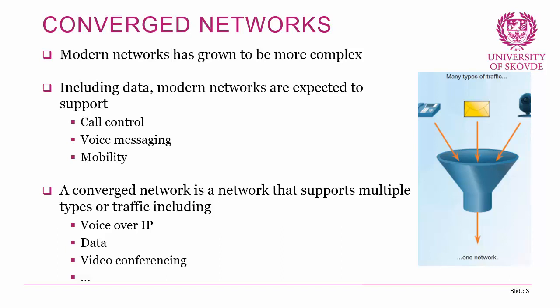Traditionally there have been different networks for each type of traffic — one telephony network, one data network, and possibly a separate video conferencing network. But in a modern converged network, one network is able to support all those different types of traffic. In one sense that's good because there's only one network to manage, but on the other hand it brings more complexity because the requirements on the network are increased.